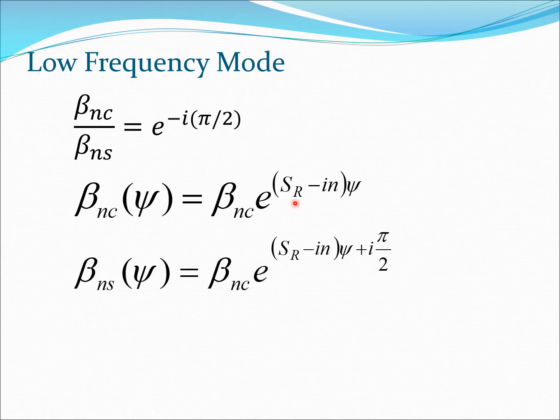Just as before, the equations can be written. We can write the beta NC equation and here I am directly using the fact that S is SR minus IN for this case. Then I can write this equation beta NS in the same form, and if I put beta NC here what would happen is that I would get a plus i pi by 2 here.